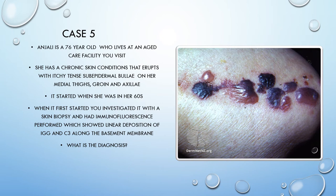Case five. Anjali is a 76-year-old who lives at an aged care facility. She has a chronic skin condition that erupts with itchy, tense, sub-epidermal bullae on her medial thighs, groin, and axilla. It started when she was in her 60s. You investigated it with a skin biopsy and immunofluorescence, which showed linear deposition of IgG and C3 along the basement membrane. If you said bullous pemphigoid, good job. Features pointing to this diagnosis include the older age, the tense sub-epidermal bullae, the distribution on medial thighs, groin, and axilla — areas with skin folds — and the fact they're quite itchy and uncomfortable.